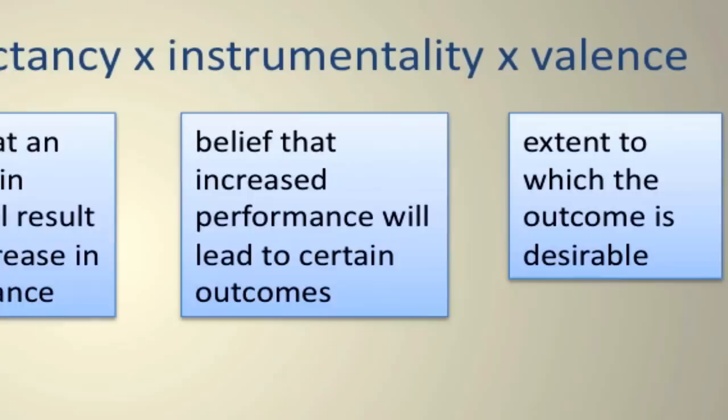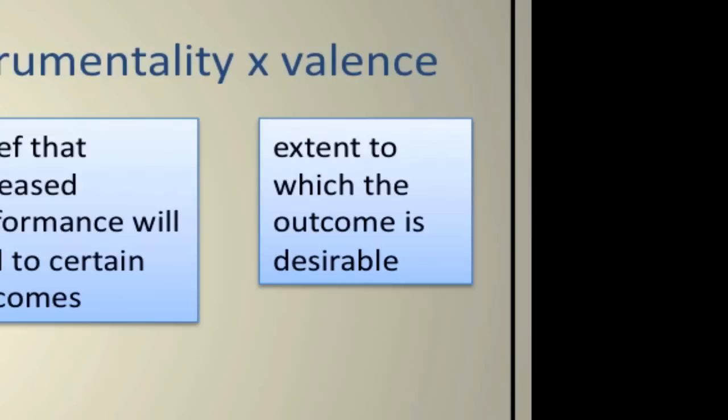The last component of expectancy theory is what we refer to as valence. Valence is the extent to which that outcome is desirable. If achieving an A on an exam was not desirable for you, if you didn't care, then you probably won't put forth the effort in studying — even if you felt that studying harder would result in increased performance, and even if you believed you could receive a certain outcome like an A. If that A was not desirable, you would not have a significant enough motivational force to actually engage in the behavior.